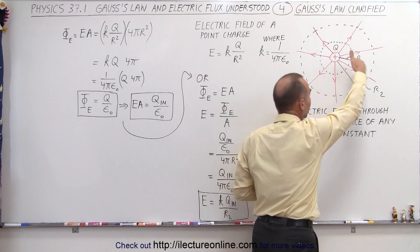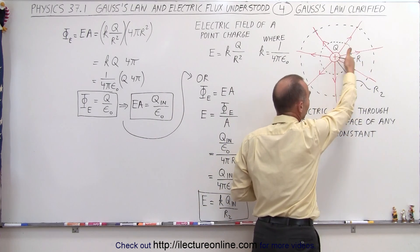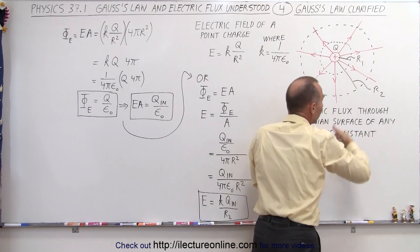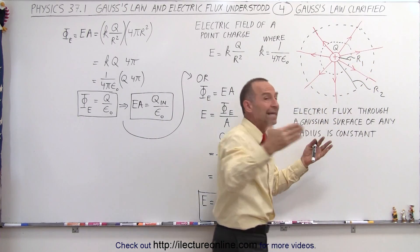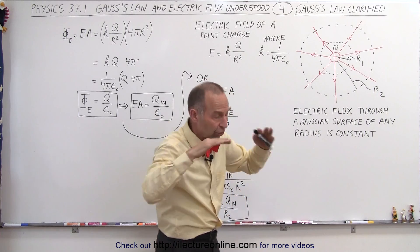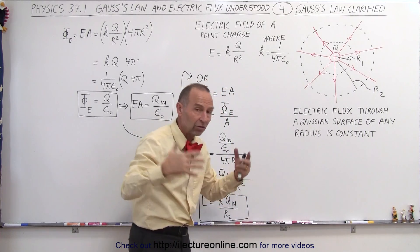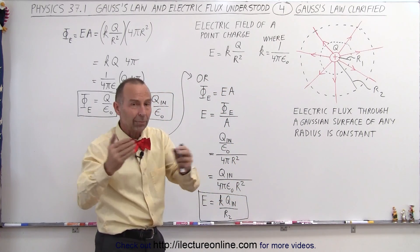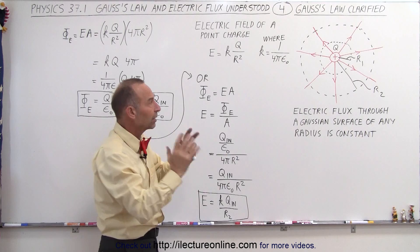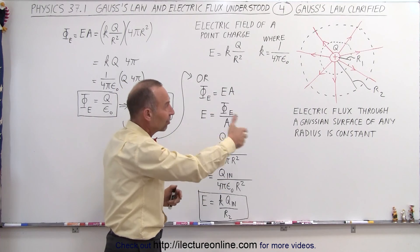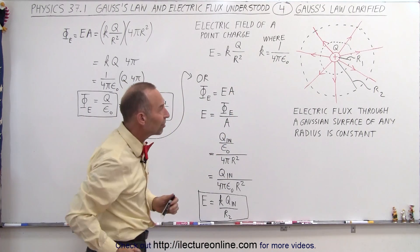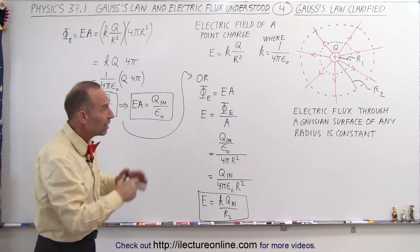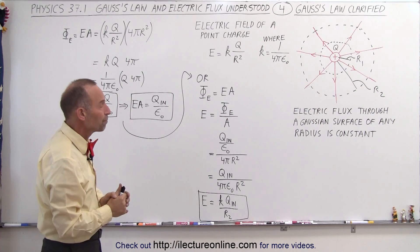Since the flux lines remain constant as you go farther out, the field gets weaker but the area of the surface gets larger. So a weaker field times a larger surface — that product will remain constant. It simply represents the amount of flux going through any of the different Gaussian surfaces.